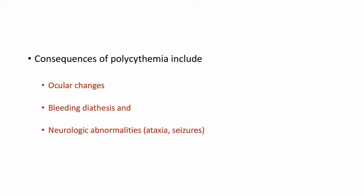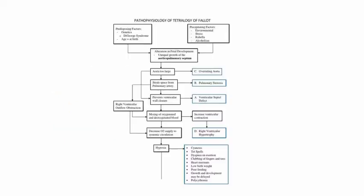The consequences of polycythemia include ocular changes, bleeding diathesis, and neurologic abnormalities like ataxia and seizures. In the pathophysiology flow chart, the aorta is too large and it steals space from the pulmonary artery and prevents ventricular wall closure. There will be mixing of oxygenated and deoxygenated blood leading to hypoxia, and we can see the consequences here.